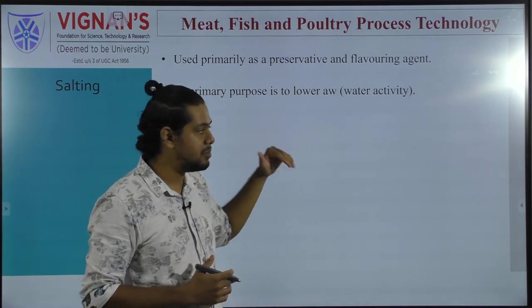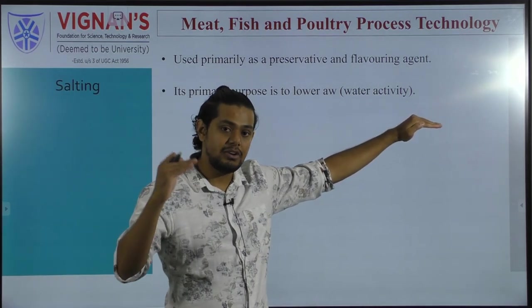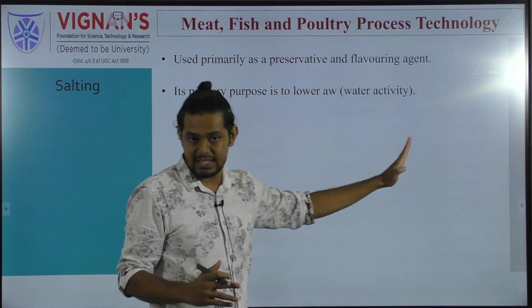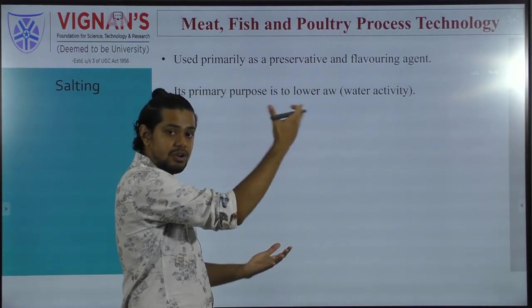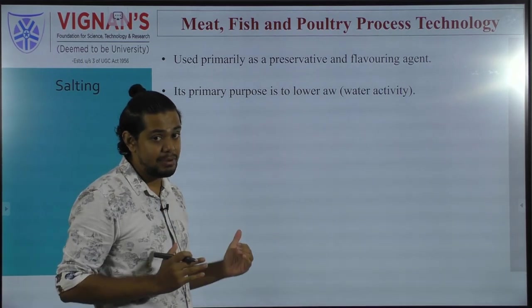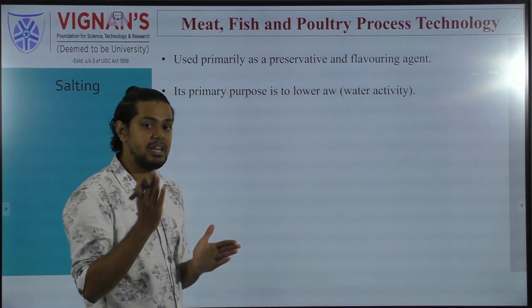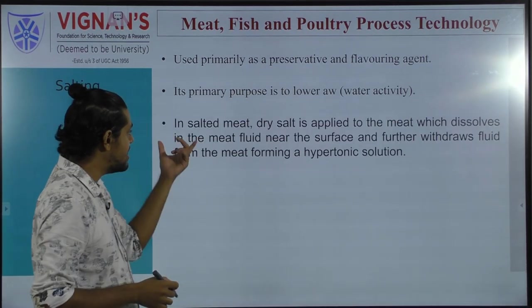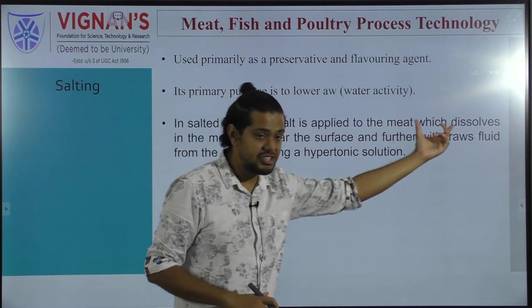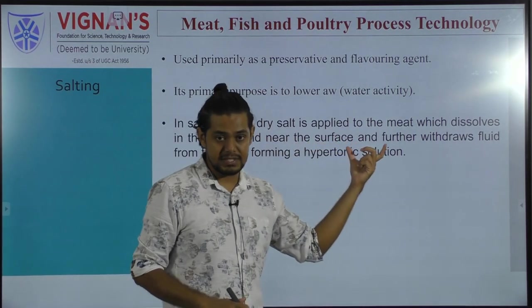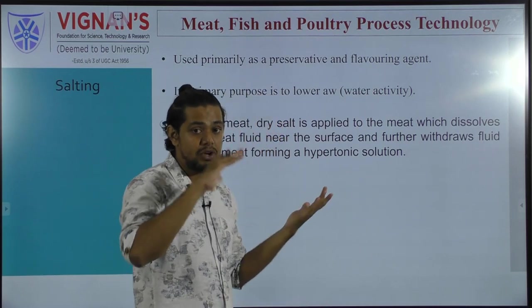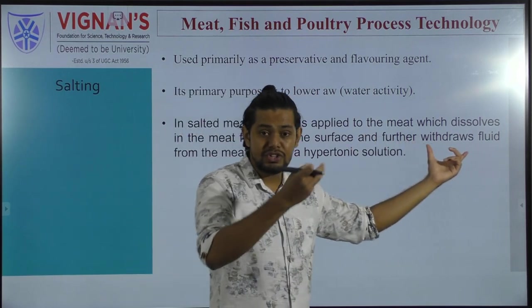In salted meat, dry salt is primarily applied onto the meat surface. The salt rubbed onto the surface dissolves the meat fluids near the surface, withdrawing fluids from the surface to form a hypotonic solution. The salt then migrates inward, dissolving throughout the meat substance until the salt concentration is uniform throughout.